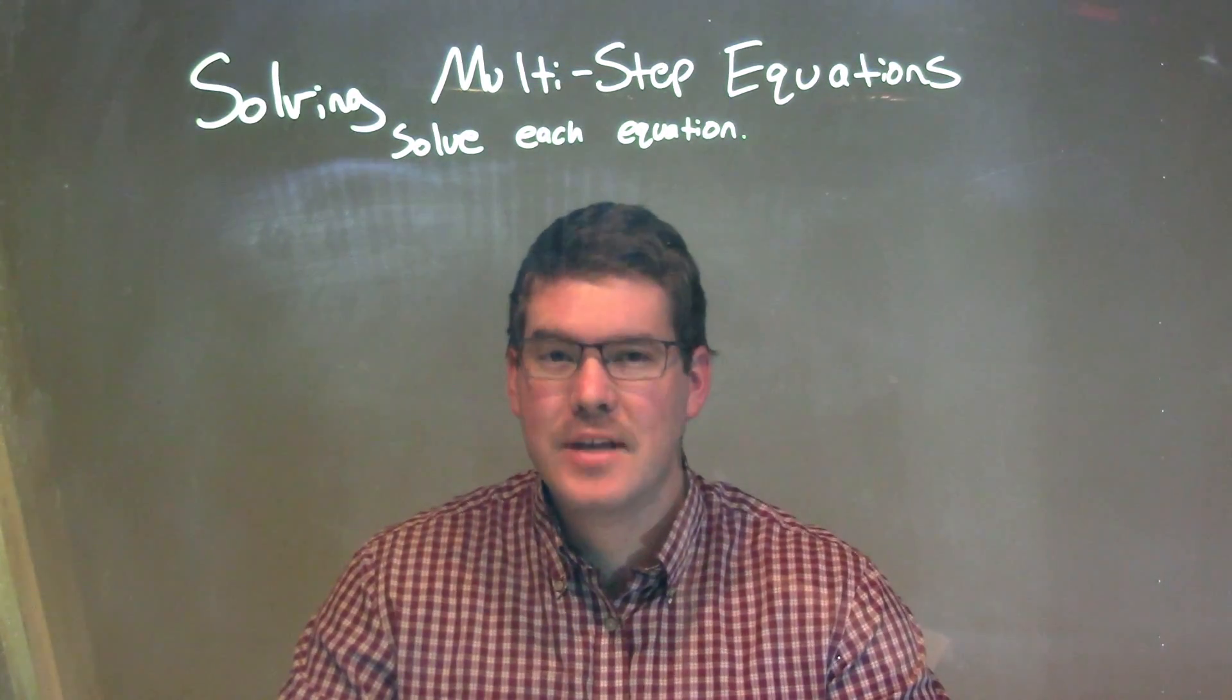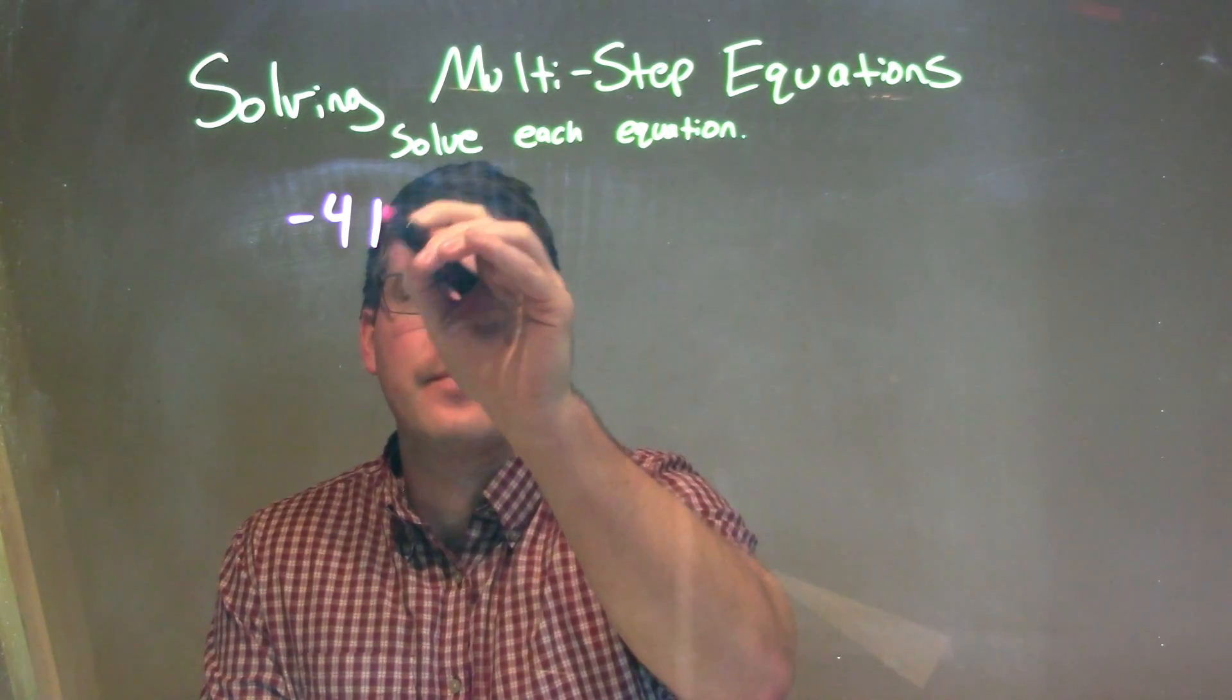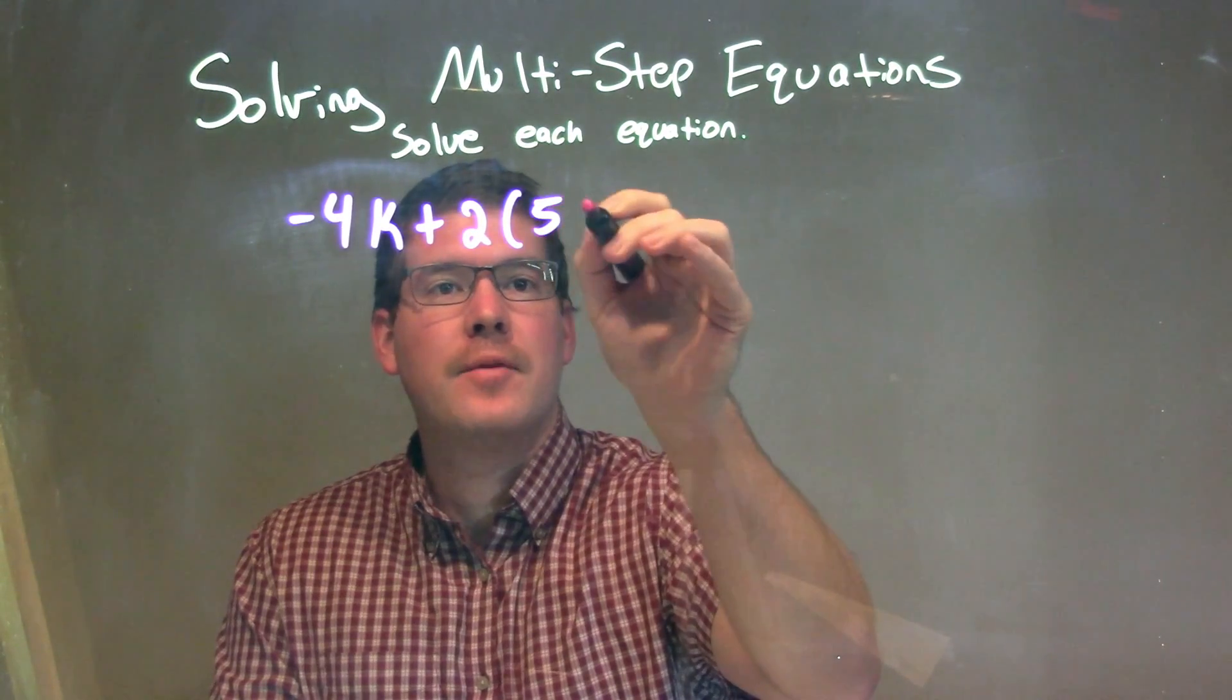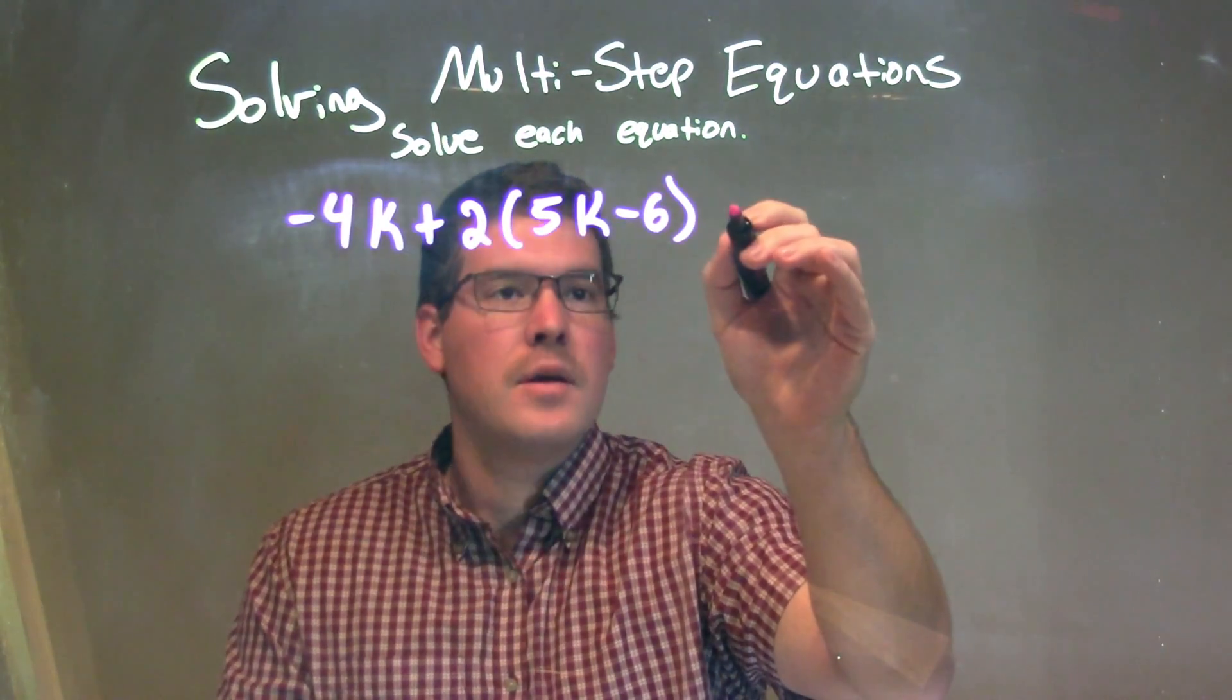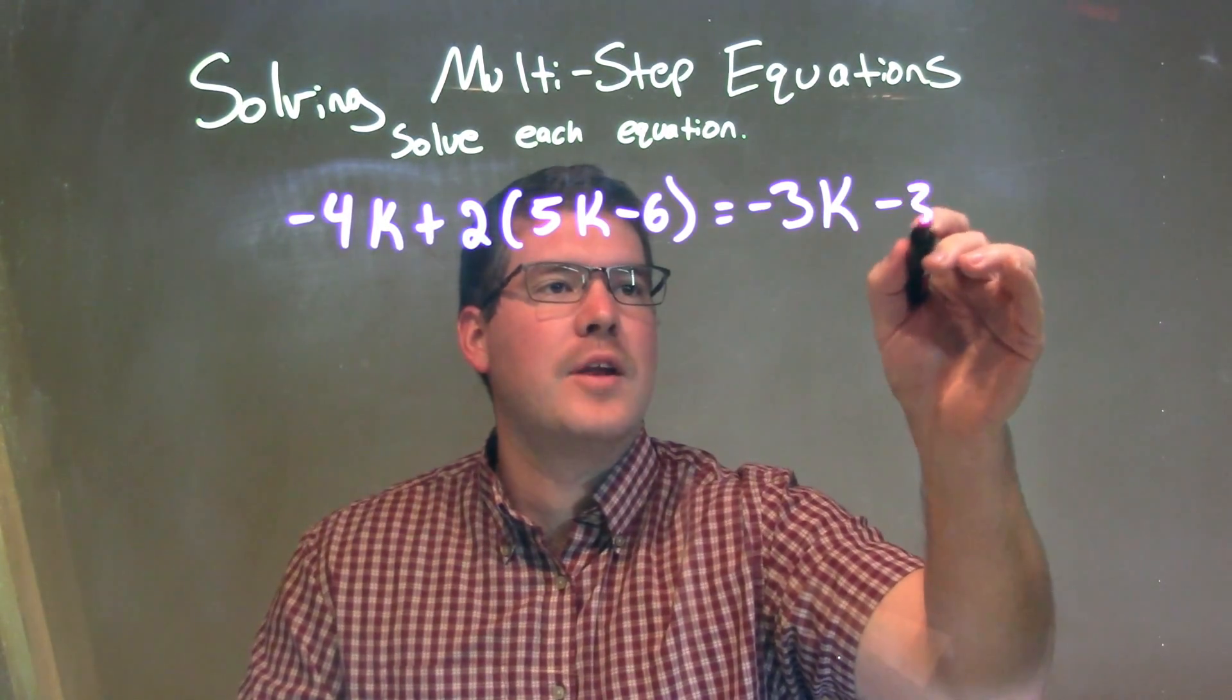So, if I was given this equation, negative 4k plus 2 times, in parentheses, 5k minus 6 equals negative 3k minus 39.